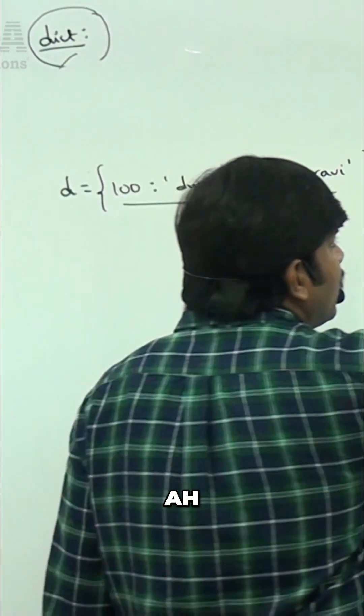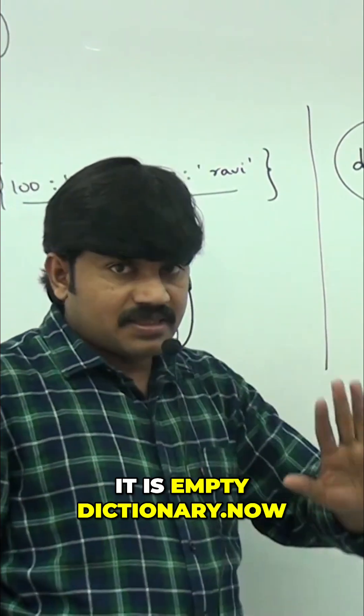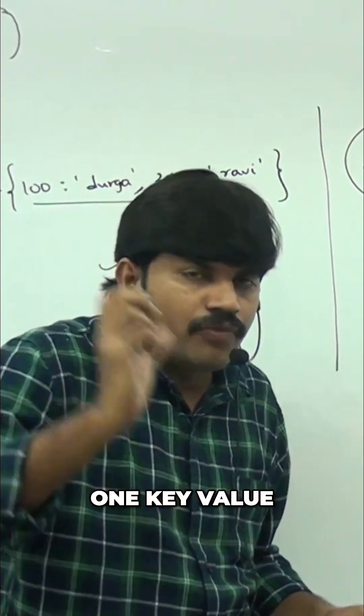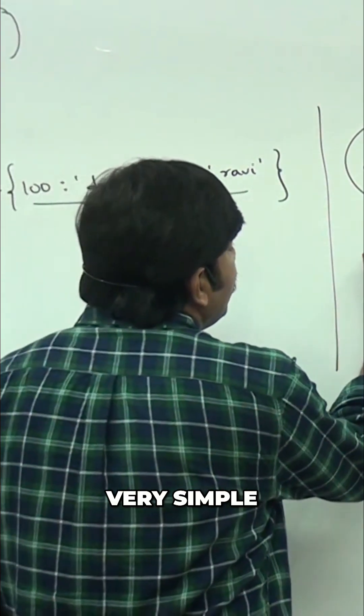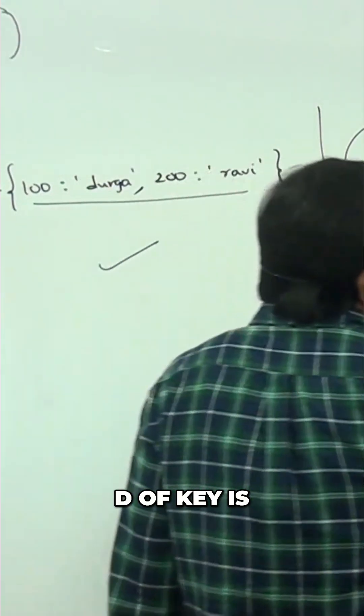I just created an empty dictionary. It is an empty dictionary. Now I want to add a key-value. What is the option? Very simple: d of key.